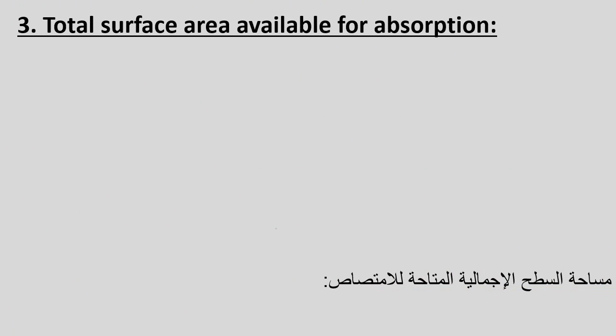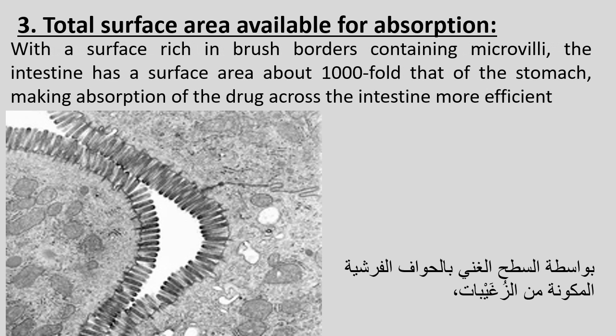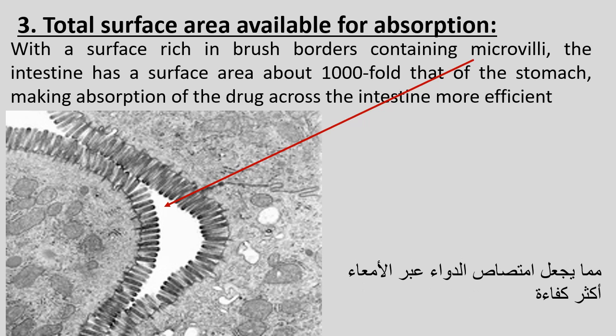Total surface area available for absorption. With a surface rich in brush borders containing microvilli, the intestine has a surface area about 1000-fold that of the stomach, making absorption of the drug across the intestine more efficient.